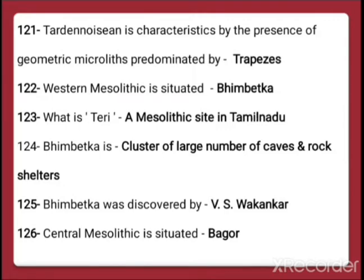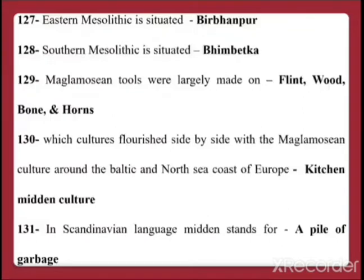Question 125: Bhimbetka was discovered by V.S. Wakankar. Question 126: Central Mesolithic is situated in Baghor, which is a town in Rajasthan. Question 127: Eastern Mesolithic is situated in Birbhanpur, and Birbhanpur is in Uttar Pradesh.